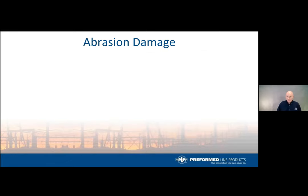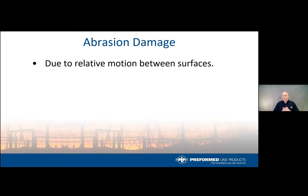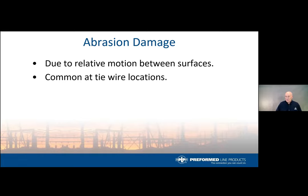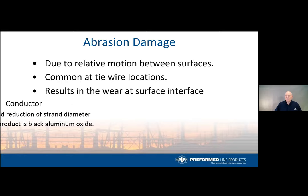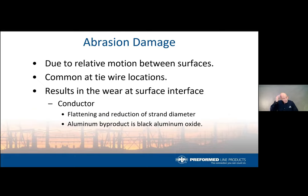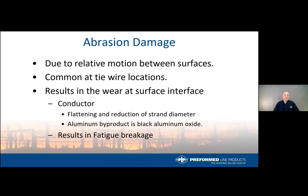In a distribution system, the most common damage from vibration is abrasion. This happens with looseness in connections combined with conductor vibration — surfaces moving on surfaces. It's extremely common at hand tie wire locations because hand tie wire has low tensile strength, no spring constant, bends where it goes, and tends to stretch and get loose at the support location. Wear shows up as flattening and reduction in strand diameter, producing black aluminum oxide as a byproduct, ultimately leading to fatigue breakage of the strands.